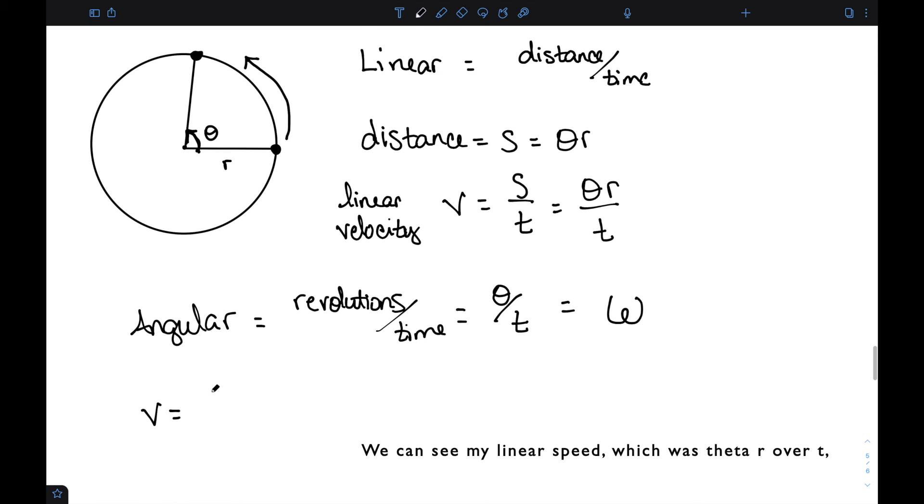So we can see my linear speed which was theta r over t can be rewritten as theta over t times r. Theta over t is omega times r. So linear speed and angular speed are very much related.